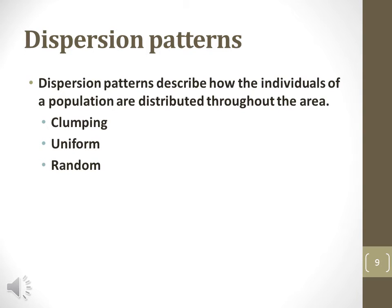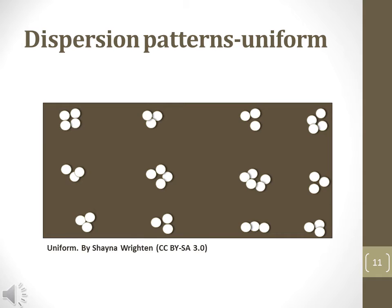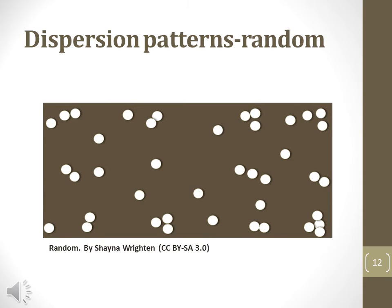Dispersion patterns describe how a population is distributed throughout an area. Populations may be dispersed in a clumping pattern, a uniform pattern, or a random pattern. A clumped pattern shows many individuals found in some areas but none in others. A uniform dispersion pattern means the population is generally found in equal density over an area. A random dispersion pattern is just that — random. Some individuals may be clumped or some may be solitary. Populations with a random dispersion pattern are the most difficult to estimate.